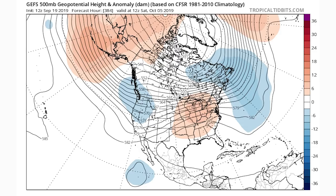They're showing the same type of pattern for October 5th at the end of the model run, though confidence is lower that far out. For now, I don't really see a change in the pattern. I previously made a video saying the pattern was going to switch, and it did look like it was going to, but the models have been struggling to identify what the teleconnections are going to do at long range.